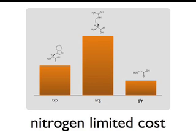As I said, we used the systems biology approach and wanted to estimate these costs in different environments. Looking at a nitrogen-limited condition, we can see that costs change as the supply of nutrients changes. Tryptophan becomes less expensive, but arginine with its five nitrogen atoms becomes much more expensive, and the cost of glycine doesn't change too much. Simulating different environments to estimate cost is an advantage of using a systems biology approach.